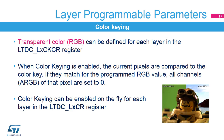A color key, or RGB, can be configured to be representative of a transparent pixel. If color keying is enabled, the current pixels, after format conversion and before blending, are compared to the color key. If they match the programmed RGB value, all channels, or ARGB, of that pixel are set to 0. The color key value can be configured and used at runtime to replace the pixel RGB value.